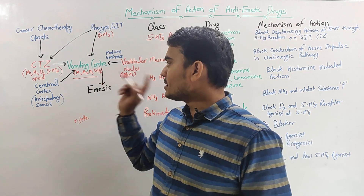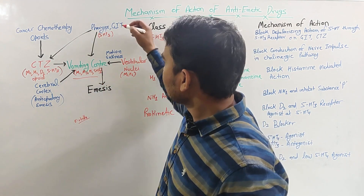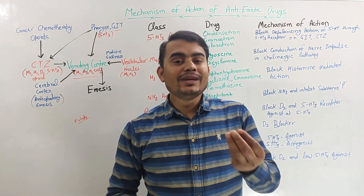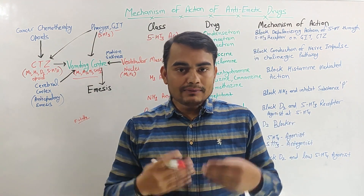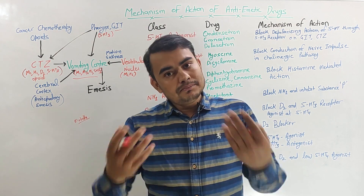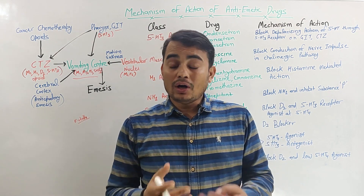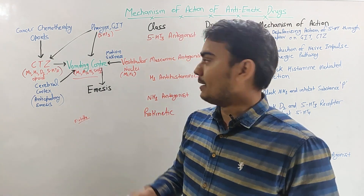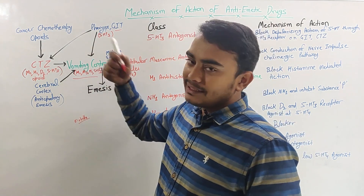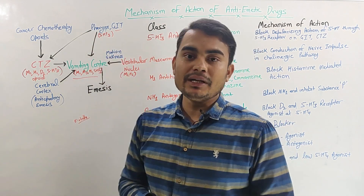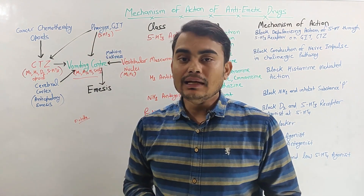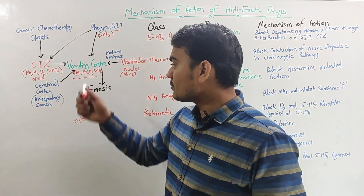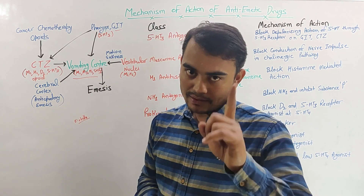The vomiting center is stimulated by various different stimuli. The first stimulus comes from the pharynx and GIT. Sometimes we eat degraded or waste food which can induce vomiting. That food stimulates the 5-HT3 receptor in the pharynx or the GIT, and in the GIT this 5-HT3 will further stimulate the vomiting center, causing emesis.